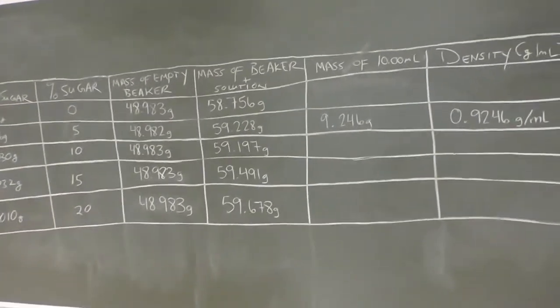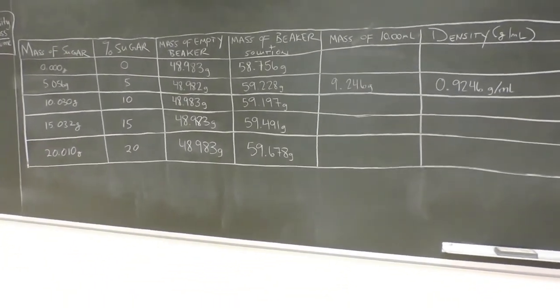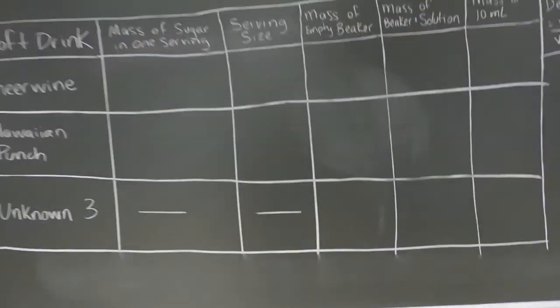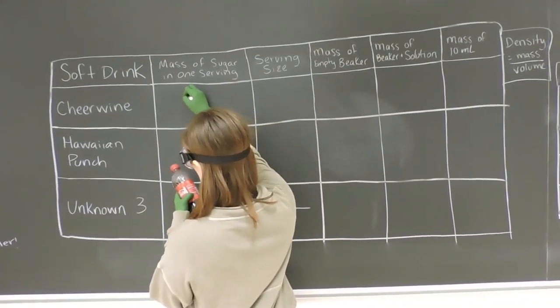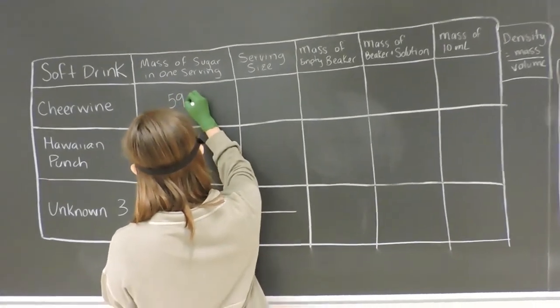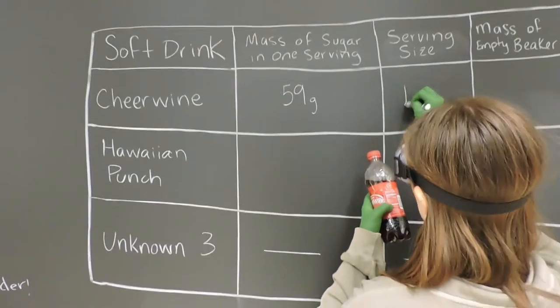From here, you should be able to develop a calibration curve. Next, we're going to find the sugar content of 3 different soft drinks. One will be Cheerwine, one will be Hawaiian Punch, and one will be the unknown number 3. The first thing we're going to write down is the nutritional facts on the back.